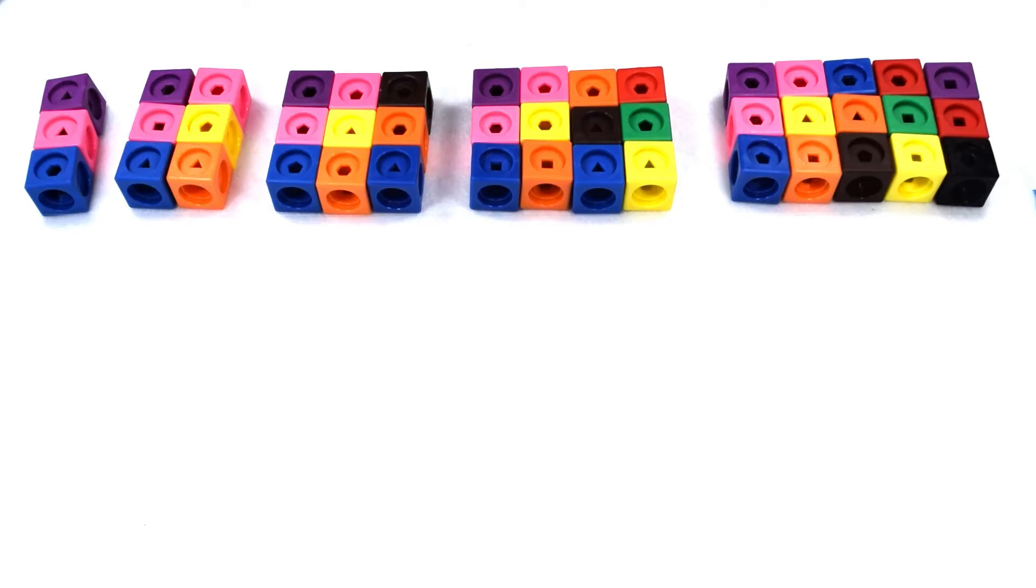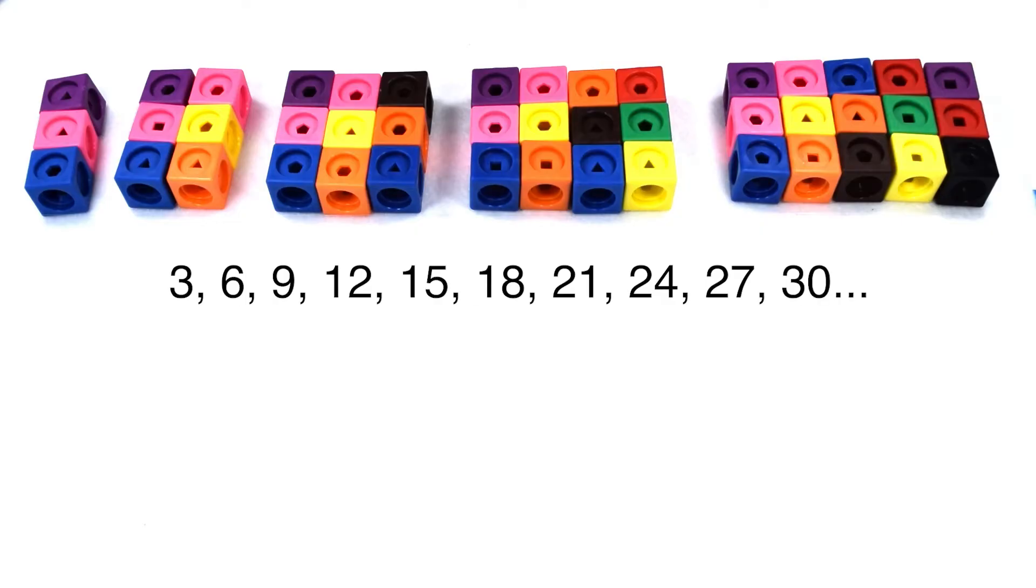So, so far our multiples of three read three, six, nine, twelve, and fifteen. We could continue on with our three times tables. Three times six would be eighteen, three times seven twenty-one, three times eight twenty-four, three times nine twenty-seven, three times ten is thirty, and add those onto our multiples list.